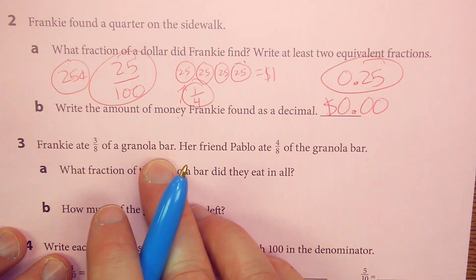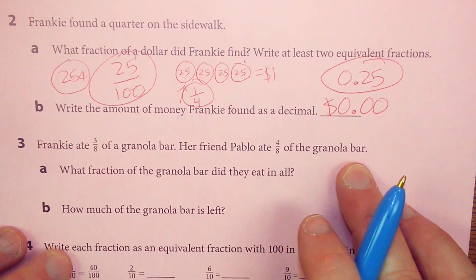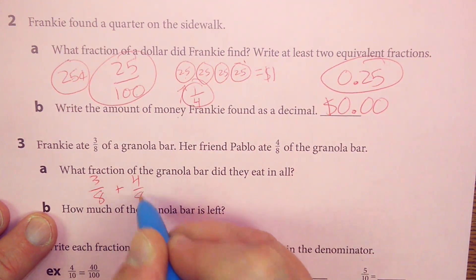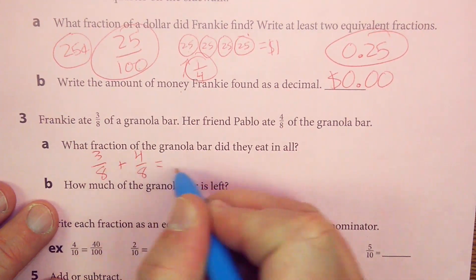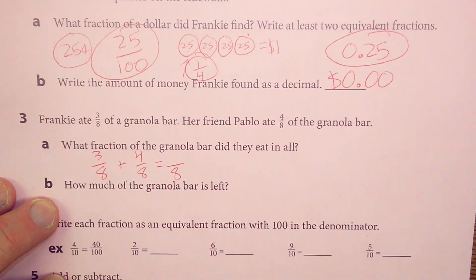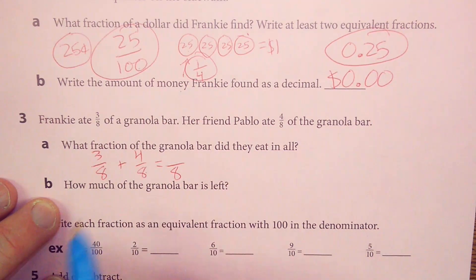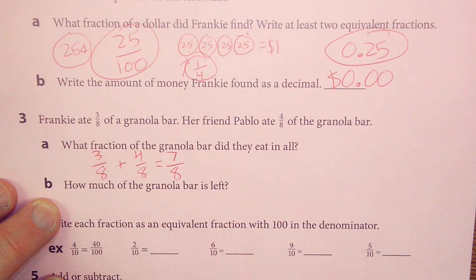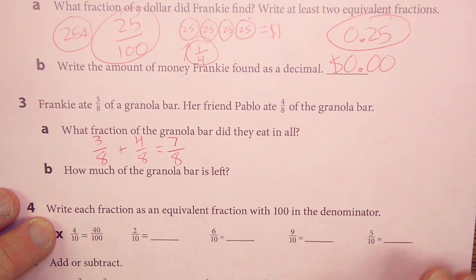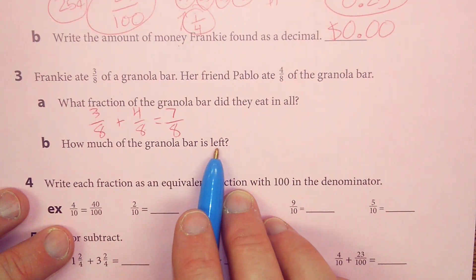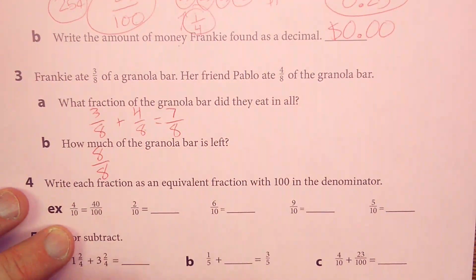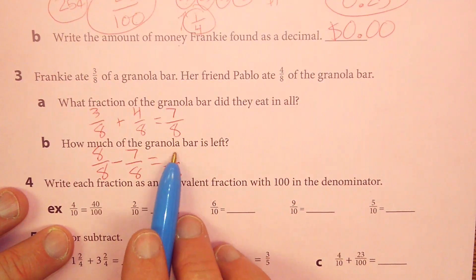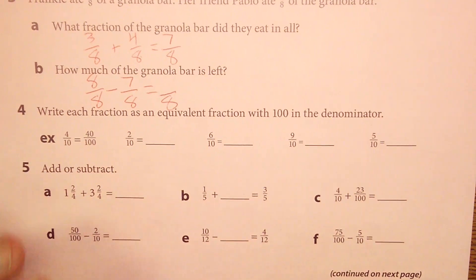Frankie ate three-eighths of a granola bar. Her friend Pablo ate four-eighths of the granola bar. What fraction of the granola bar did they eat in all? Three-eighths that Frankie ate, plus the four-eighths that Pablo ate. Combining them will give you the total amount of the granola bar that they consumed. So three of eight pieces, four of eight pieces. Combine the three and the four, you get seven-eighths. Make sure you label it. You'll notice I haven't been doing a great job labeling, but that is your job to make sure that you write seven-eighths of the granola bar. How much of the granola bar is left? Originally, we had one granola bar, which would be eight-eighths. But we ate, or we subtracted, seven-eighths. So how much is left if I subtract seven from eight? I'm going to let you fill in this answer here. Pause this video if you need to.